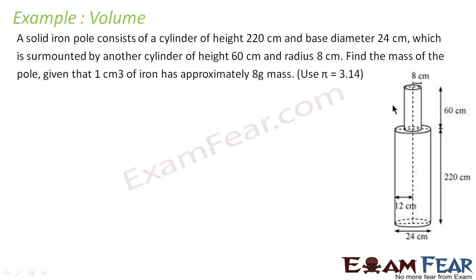Let's take another example. A solid iron pole consists of a cylinder of height 220 cm and base diameter 24 cm, surmounted by another smaller cylinder of height 60 cm and radius 8 cm. We have to find the total mass of the pole, given that 1 cm³ of iron equals 8 grams approximately.